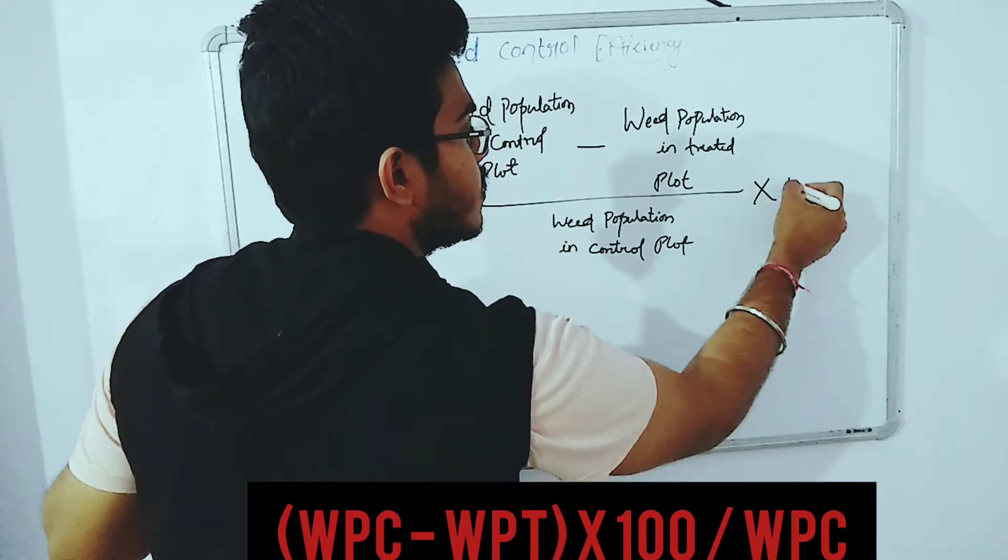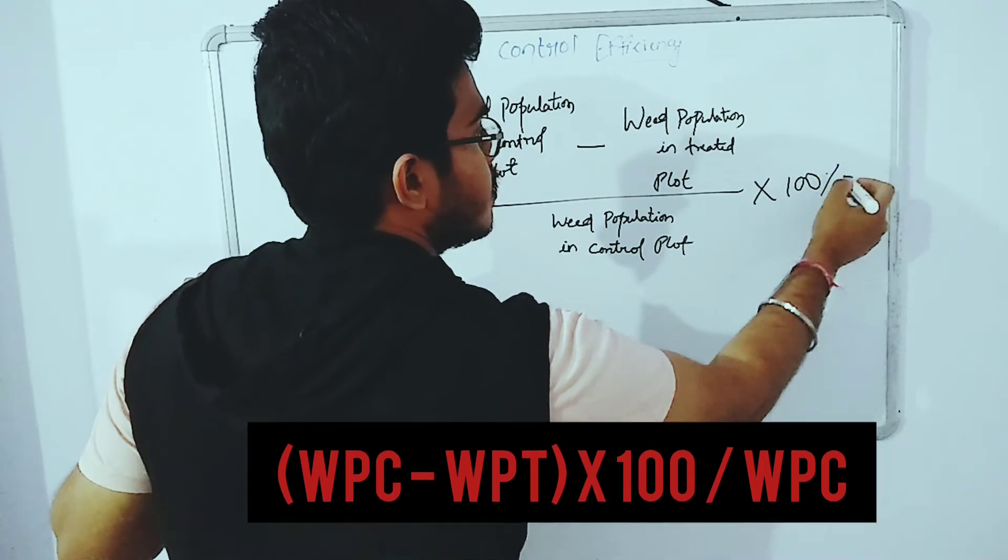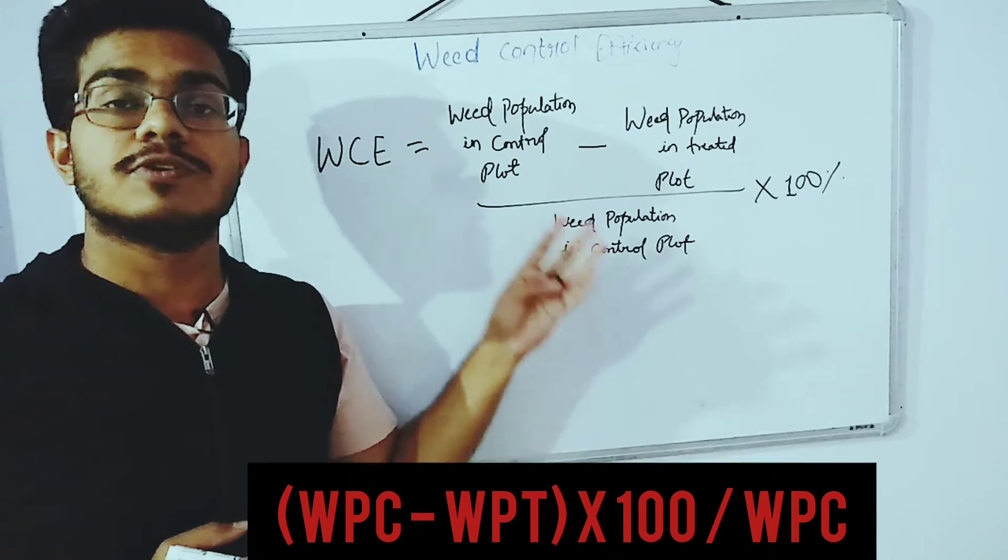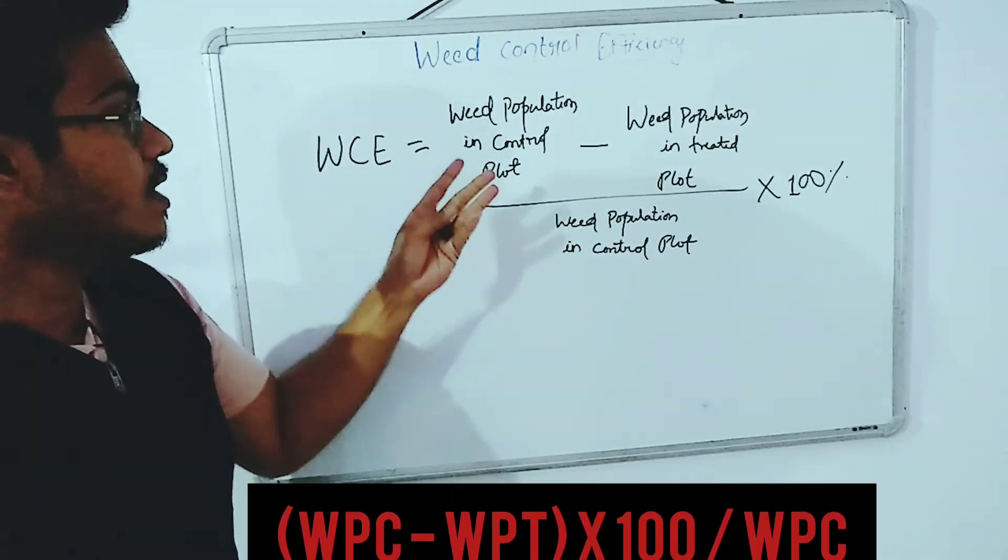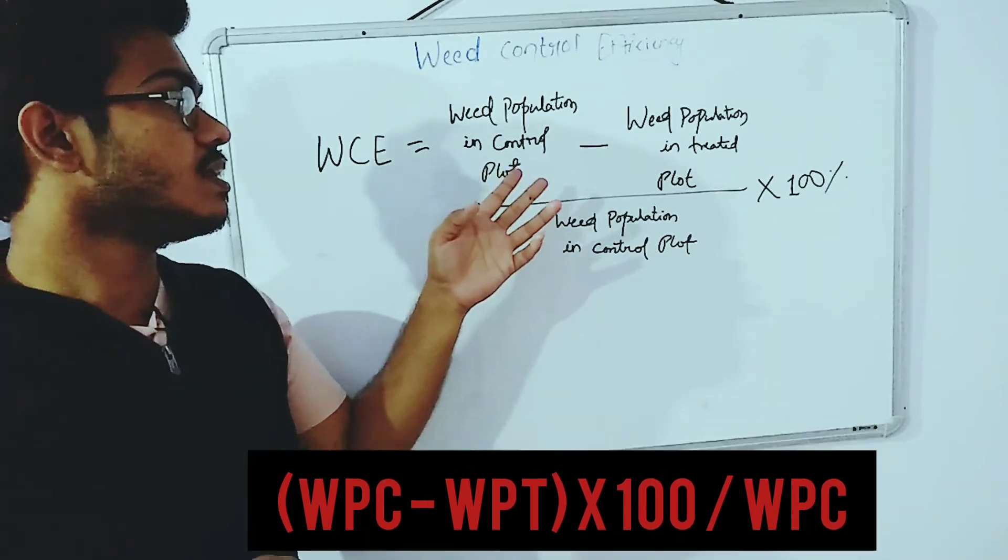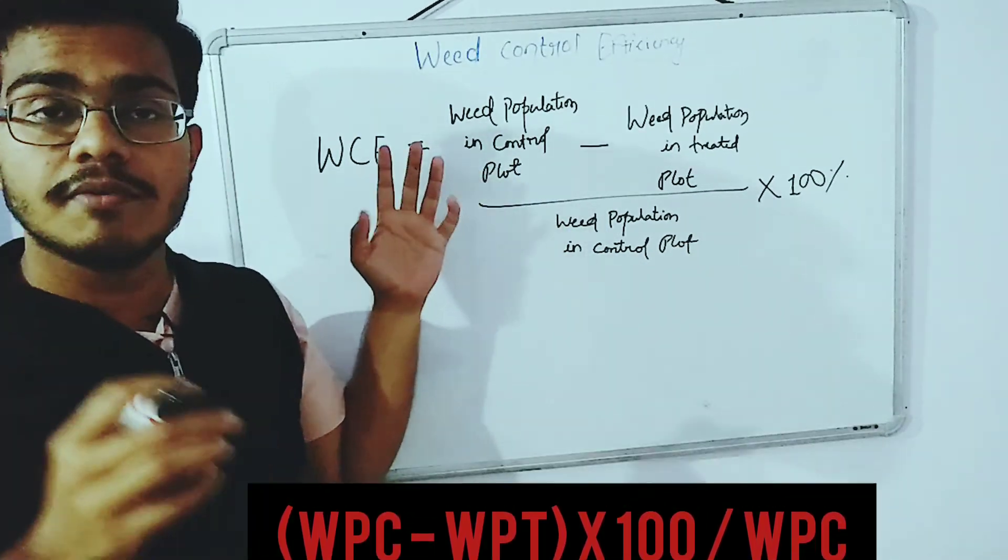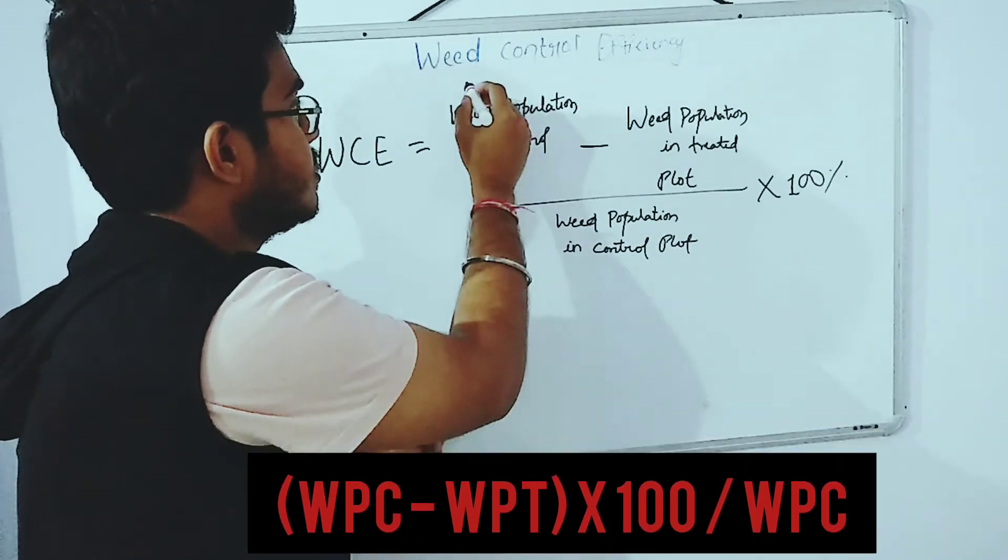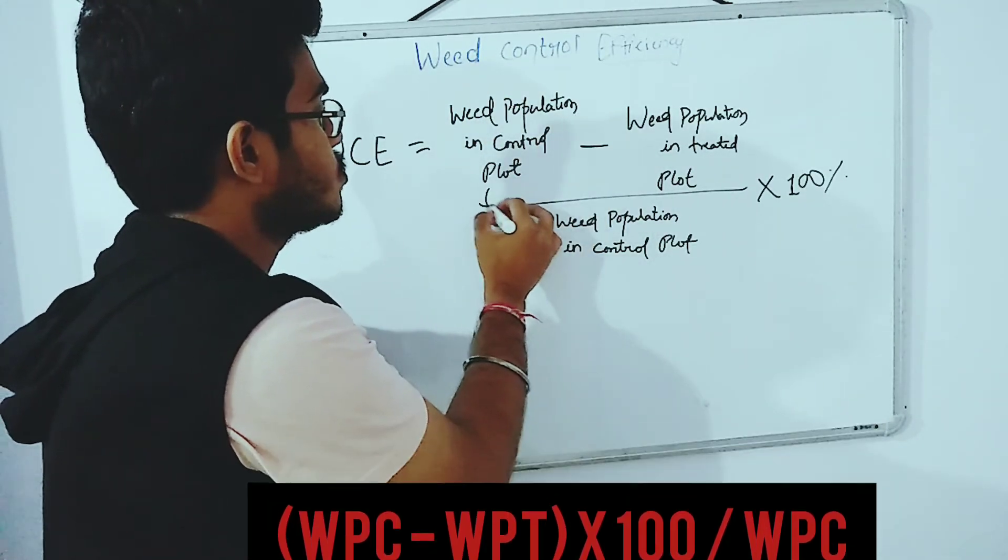Times 100. The result will be obtained in terms of percentage. Here we have to calculate first the weed population in the control plot, that is the yield of the weed in the control plot.